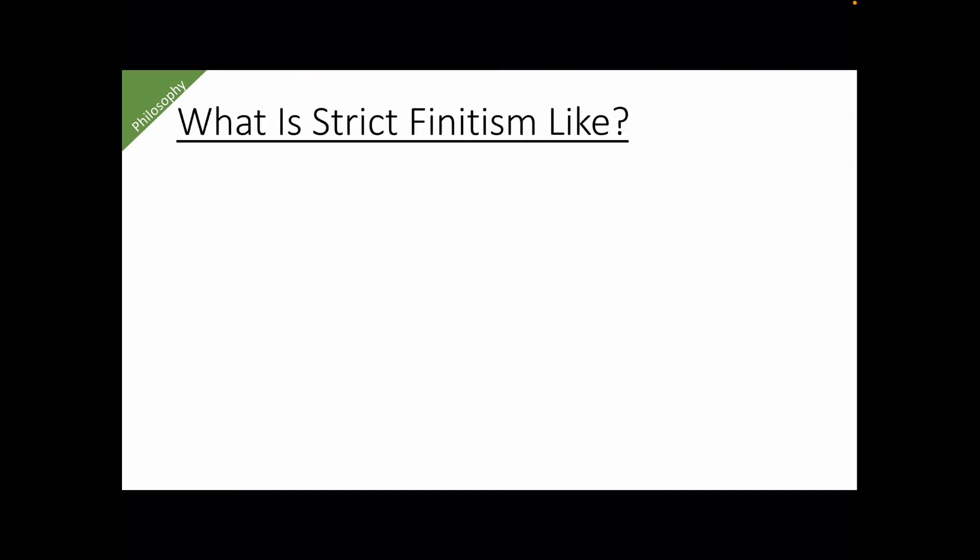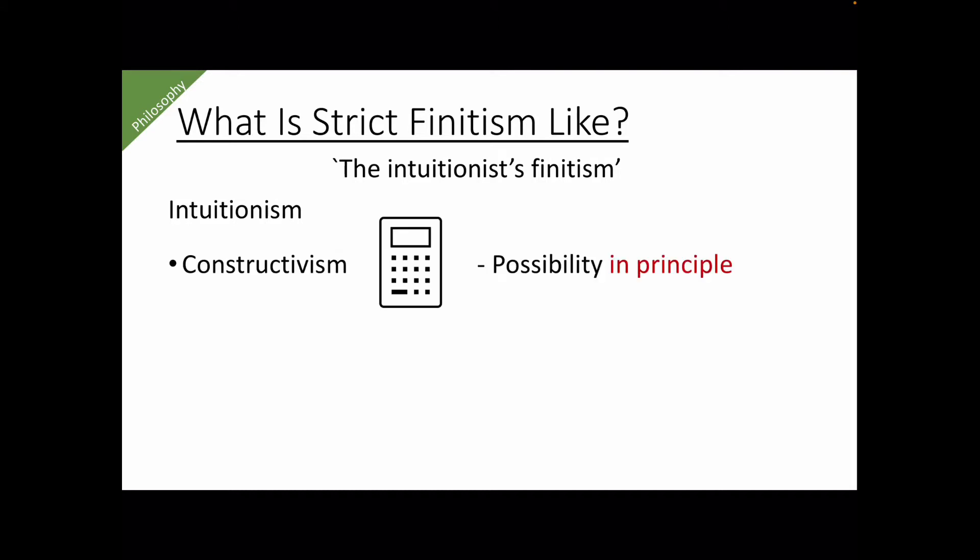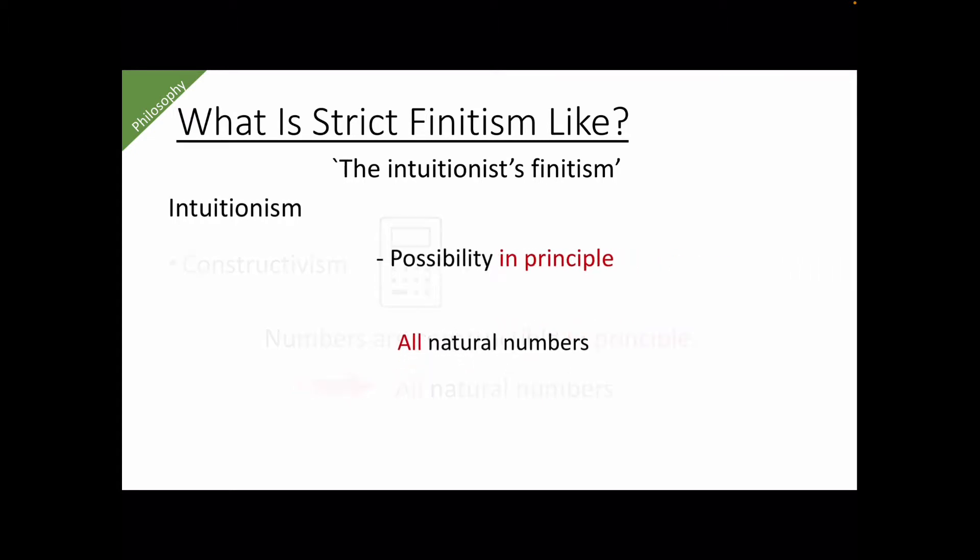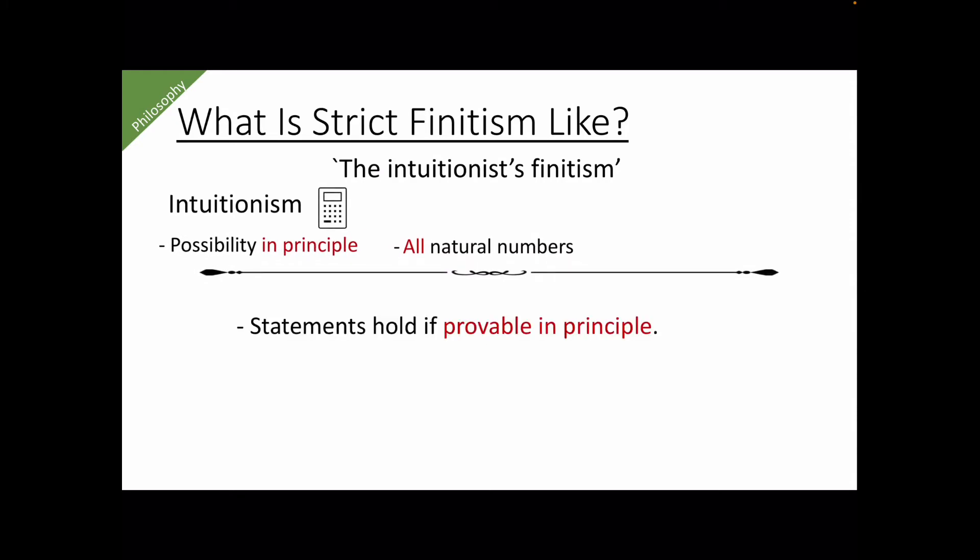I think that saying strict finitism is the intuitionist's finitism is not bad as a slogan. On the one hand, intuitionism is a kind of constructivism that uses the notion of possibility in principle. So according to the intuitionists, numbers are constructible in principle, and therefore, as a result, all natural numbers are legitimate to them. And as for statements, statements hold if they are provable in principle, and this is why they famously reject the law of excluded middle, LEM.